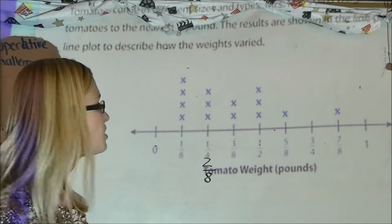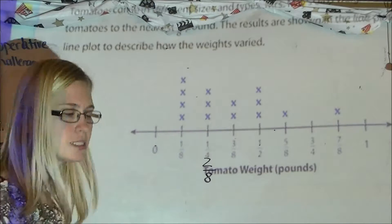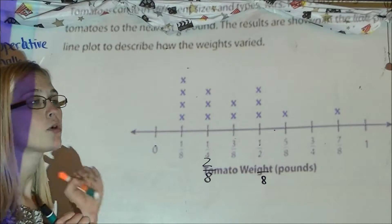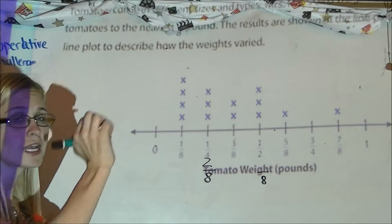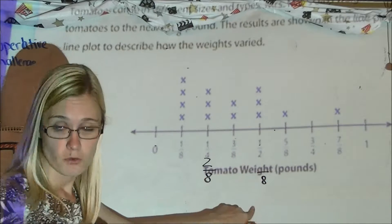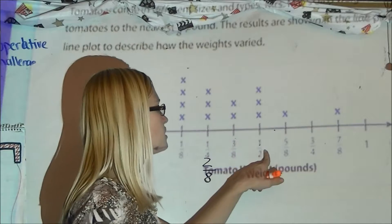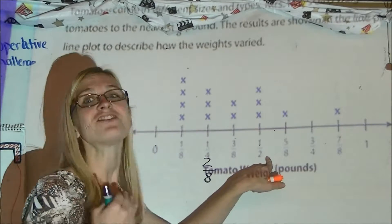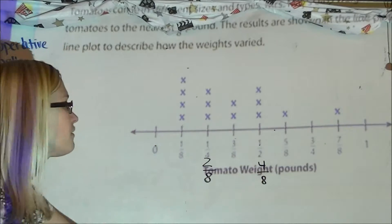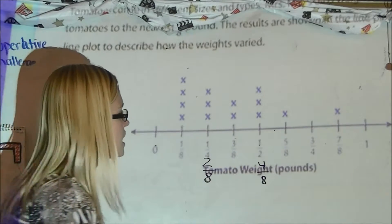For the fraction with denominator 2, I need to get it to 8ths. Going from 2 to 8 means I'm multiplying, not dividing. 2 times 4 is 8, and if I do that to the denominator I also do it to the numerator: 1 times 4 is 4. So the equivalent fraction for 1/2 is 4/8. That makes sense since 4 is half of 8. This fraction is now in 8ths.